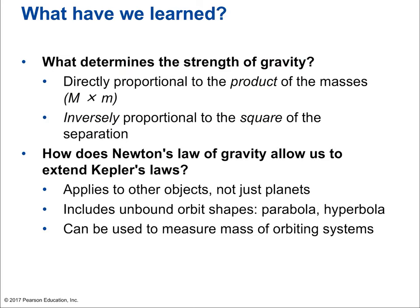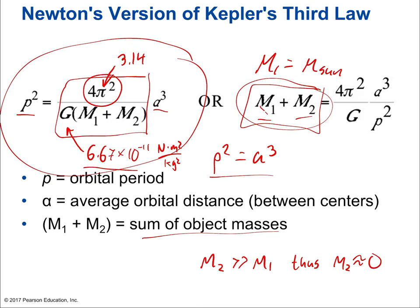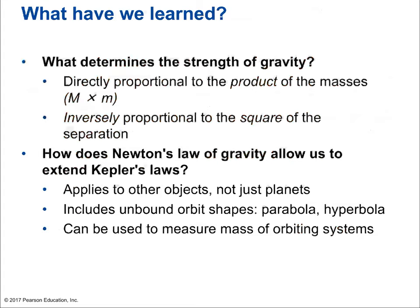What determines the strength of gravity? The direct proportionality between the product of the masses and the inverse proportionality to the square of the distance — more gravitational force if things are bigger, less if things are further apart, with a squared relationship for distance. Combining Newton's universal gravitation with Kepler's third law gives an amazing formula that allows us to calculate the mass of any orbiting system — planets, moons of Jupiter, planets around other stars, stars orbiting galaxies. It includes unbound orbital shapes like parabolas and hyperbolas.